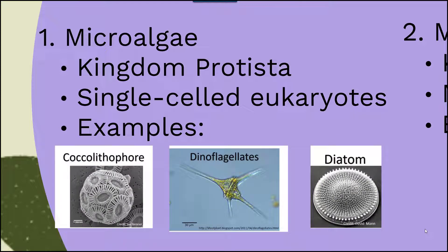A couple of examples of these microalgae are the coccolithophore, the dinoflagellate, and the diatom pictured here. These are very small organisms but very powerful in terms of their primary productive capabilities and their ability to overwhelm an ecosystem through harmful algal blooms and things along those lines.